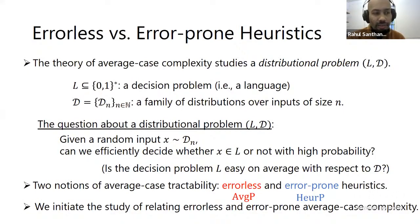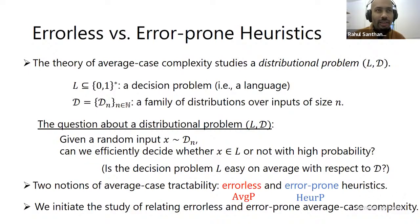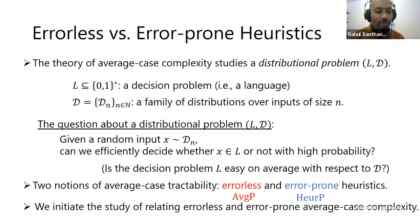This was raised already by Impagliazzo in his well-known survey on average case complexity, but it doesn't seem to have received much attention. As far as we know, we are the first to systematically study relating these notions. In some ways it's analogous to ZPP versus BPP — a far more well-known problem — but here the errors are over the space of instances rather than over the randomness of an algorithm.